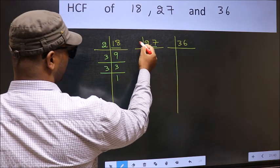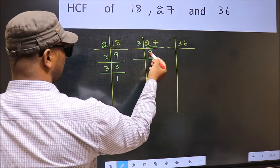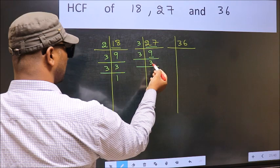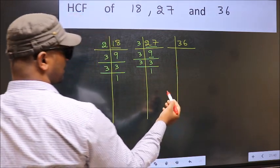27. 27 is 3 times 9 equals 27. Now we have 9. 9 is 3 times 3 equals 9. Now 3 is a prime number, so 3 times 1 equals 3. Now the other number.